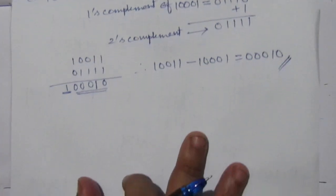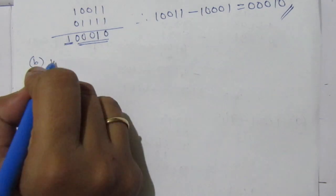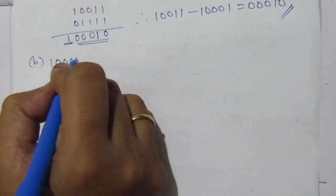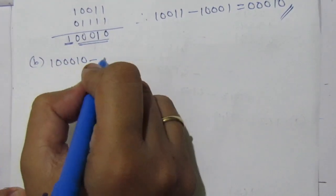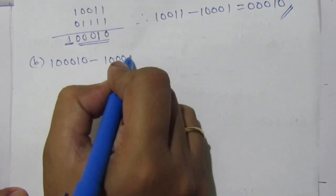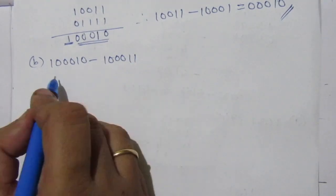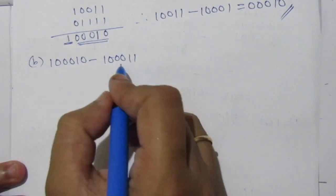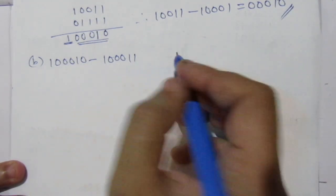Now let us do the second part. We are given 100010 minus 100011. This is the subtrahend and this is the minuend. We have to find out the 2's complement of this subtrahend.